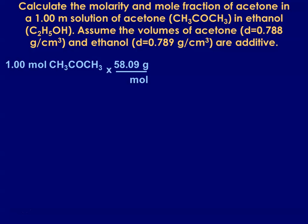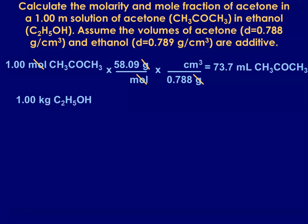However, we don't know that piece just yet. We're converting our moles of the acetone into grams so that we can use that to find the volume of our acetone because we need to have the volume pieces for both to get the volume of our solution. We have 1 kilogram of ethanol because that 1 molal solution was 1 mole of the acetone, our solute, over 1 kilogram of our solvent.